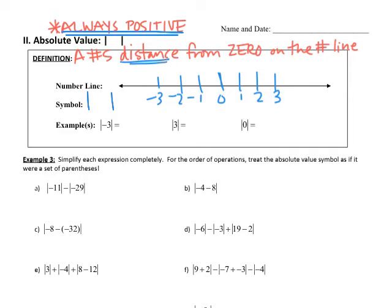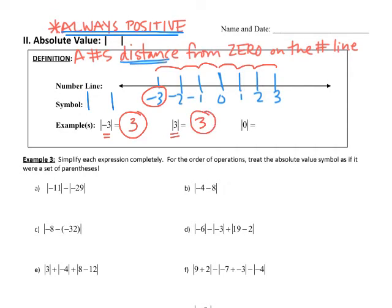How far away is negative 3 from zero? We need to give a positive answer because negative 3 is inside the absolute value symbols. Counting: 1, 2, 3 — negative 3 is 3 units away from zero. How far away is 3 from zero? 1, 2, 3 — both are 3 units away. One goes in one direction, one goes in the other, but we're only interested in positive distance. Zero is 0 units away from 0 on the number line.